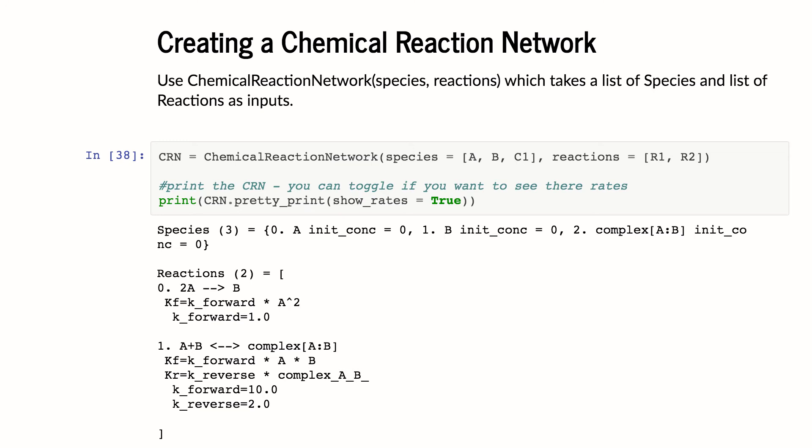And when I print it, I get all of my species. I get their initial concentrations if I've set those. And I see all my reactions. And you'll notice you can do things with this pretty print function like show rates, show parameters, different things like that to help you see what you have going on in the chemical reaction network.